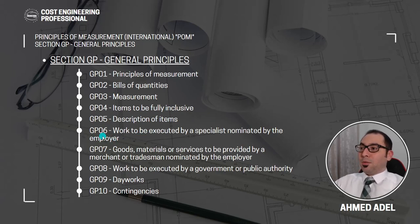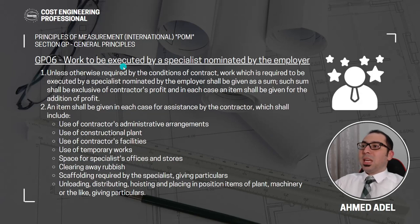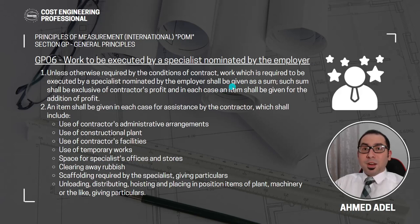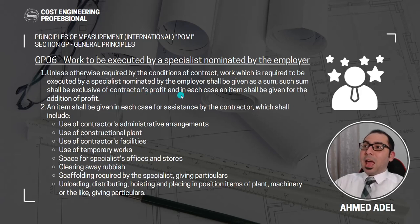In this video we'll start from subsection 6, which is work to be executed by a specialist nominated by the employer. Unless otherwise required by the conditions of contract, work required to be executed by a specialist nominated by the employer shall be given as a sum. Such sum shall be exclusive of contractor's profit, and in each case an item shall be given for the addition of profit.